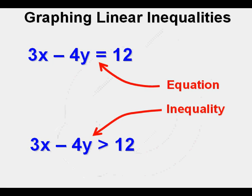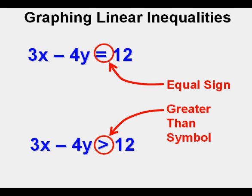A linear inequality in standard form looks very much like an equation in standard form. Here we have the equation 3x minus 4y equals 12, and the inequality 3x minus 4y is greater than 12. The only distinction between these two relationships is the symbol — an equal sign for an equation, and an inequality symbol, in this case greater than, for an inequality.